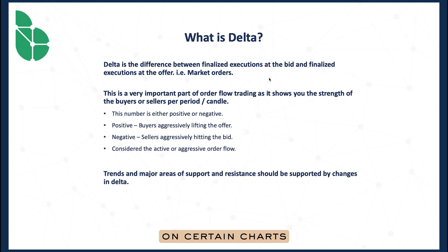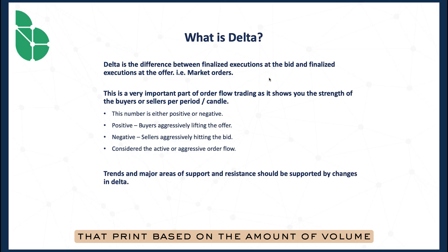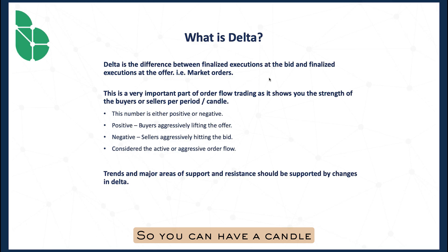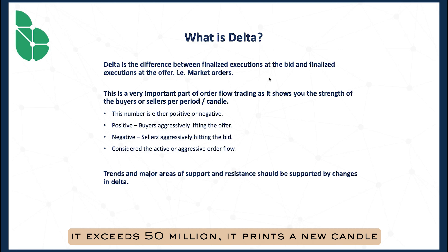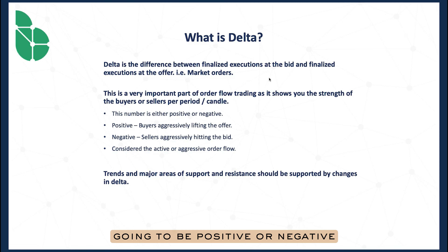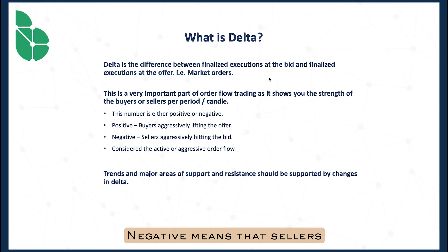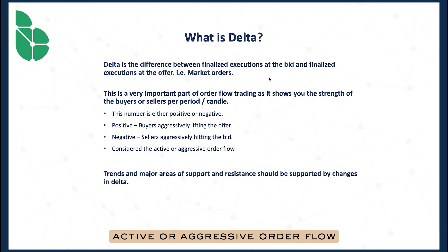On certain charts you can get options besides time-based candles — candles that print based on price ranges covered, tick charts, or candles that print based on the amount of volume, like printing a new candle every time it exceeds 50 million. Delta is either going to be positive or negative. If we have a four-hour candle and the Delta is positive, this shows us that buyers were aggressive and controlled the candle, especially if the candle is moving up. Positive means buyers are aggressively lifting the offer; negative means sellers are aggressively hitting the bid. This is active or aggressive order flow — market executions.